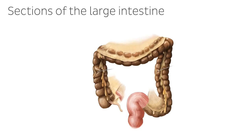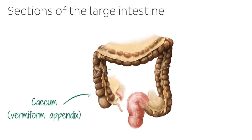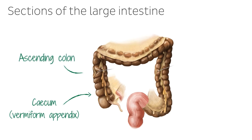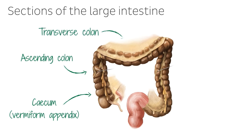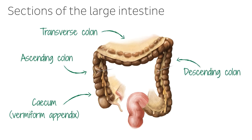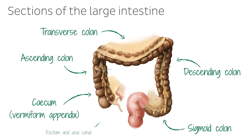The large intestine is divided into the cecum with its vermiform appendix, the ascending colon, the transverse colon, the descending colon, the sigmoid colon, and the rectum and anal canal.